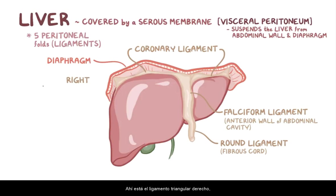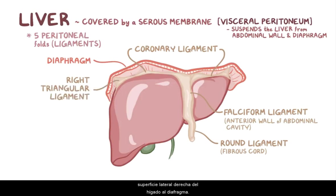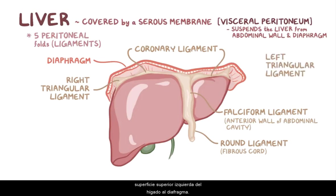There is the right triangular ligament, which is a small triangular fold which attaches the right lateral surface of the liver to the diaphragm, and lastly, there's the left triangular ligament, which attaches the upper left surface of the liver to the diaphragm.